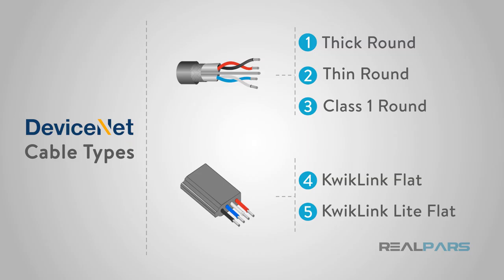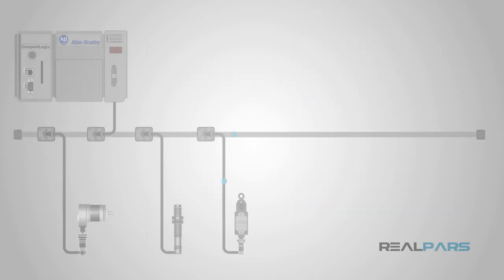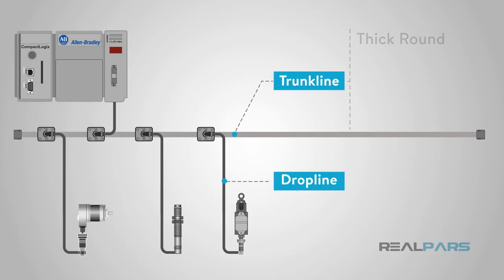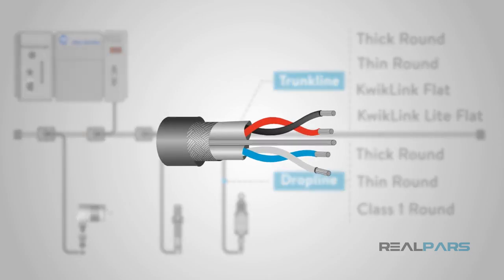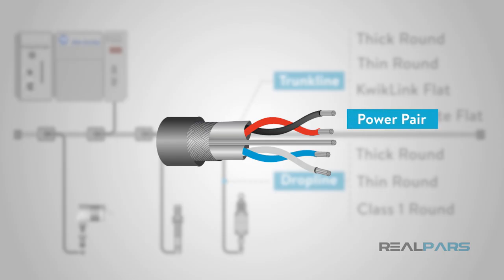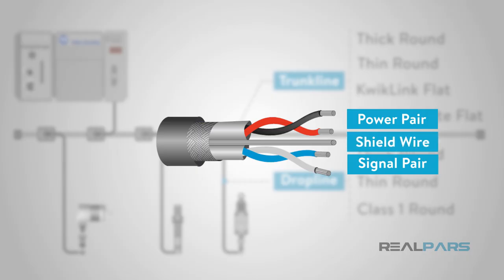Which one you choose is determined by the distances and physical limitations of your application. You can use the round thick or thin cable for either trunk or drop lines. The flat is used for trunk lines and the class 1 drop cable is used for drops. They all use twisted pairs of wire — one pair for the 24-volt DC power and one pair for the signal. There is also a shield wire used in the grounding process.